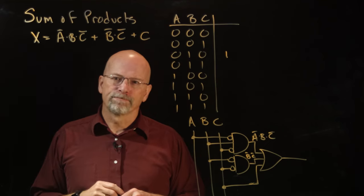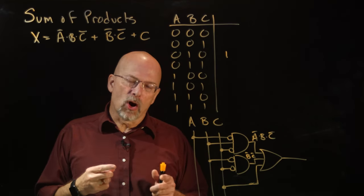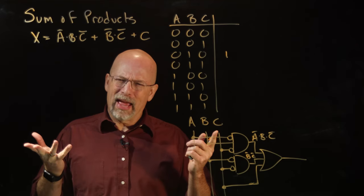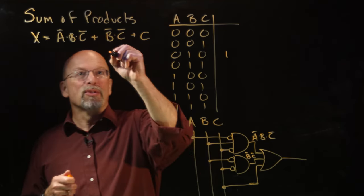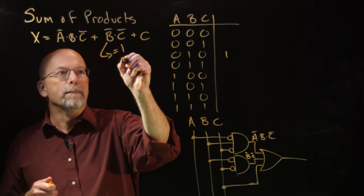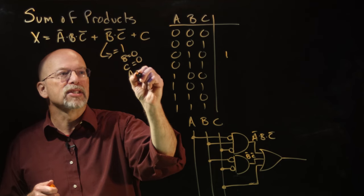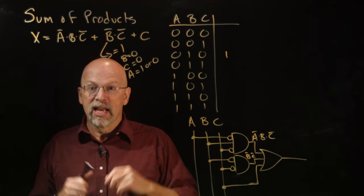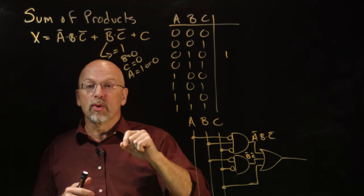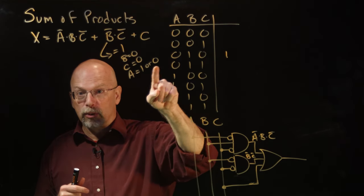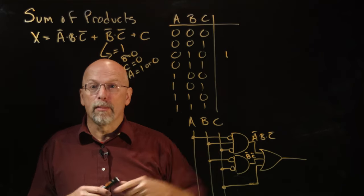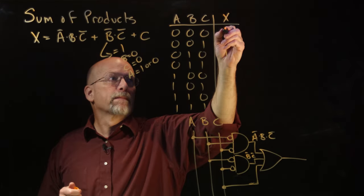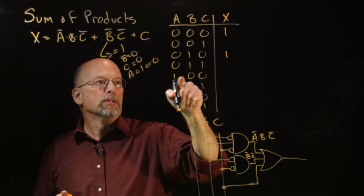What about B-bar, C-bar? B-bar, C-bar equals 1 when B is 0 and C is 0. What about A? A can be whatever it wants to be. Because A is not part of this product and can be two different values, this product is going to have two rows — one where A is 1 and one where A is 0. Those rows are at 0,0,0 and 1,0,0.